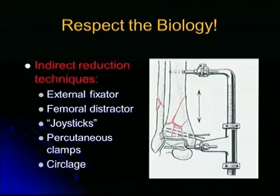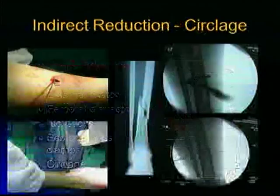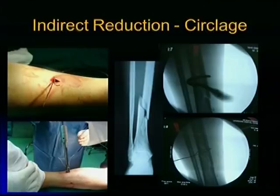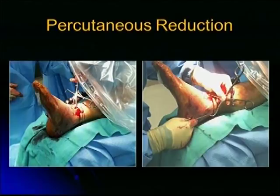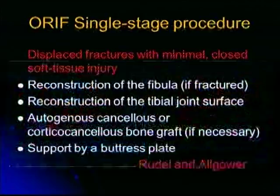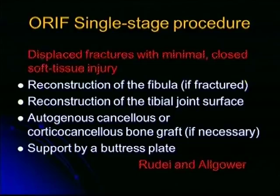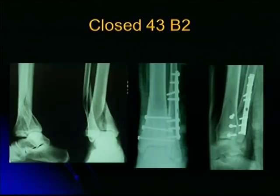Respect the biology. Indirect reduction techniques using an external fixator, femoral distractor, joysticks, percutaneous clamps, and cerclage are different ways of doing indirect reduction. This is an example of a fracture treated by just a small incision and a cerclage wire, which reduced the fracture and allowed stabilization. These are percutaneous reduction clamps — pointed reduction clamps. If you have very minimal soft tissue injury, you can do it as a single stage. Ruedi and Allgöwer described reconstruction of the fibula, reconstruction of the tibial joint surface, autogenous cancellous graft, and support by a buttress plate for the tibia, all done at the same time. This is a case where immediate reduction was done with just three screws for the tibia and a buttress support for the fibula.